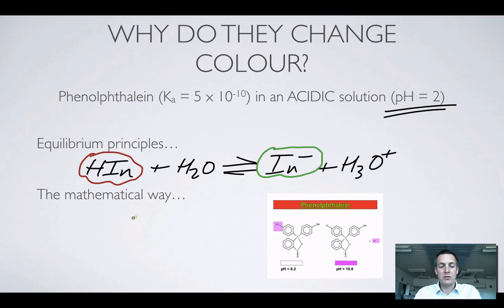If we're looking at it the mathematical way, we could say that Ka which is equal to 5 × 10⁻¹⁰ is equal to the concentration of In- divided by the concentration of HIn. I've just separated out the concentration of H+ here, but remember the concentration of H+ is 10⁻² so that's 0.01.